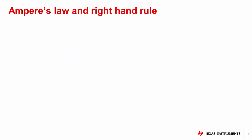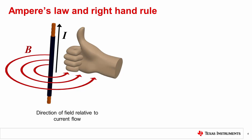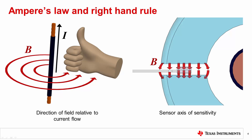Let's take a moment to give a quick review of Ampere's Law and the right-hand rule. Ampere's Law states that the magnetic field in space around a conductor is proportional to the electric current through that conductor. The magnetic field lines around a conductor form concentric circles perpendicular around the conductor. If you make a thumbs-up with your right hand and point your thumb in the direction of current flow, your fingers are curled in the same direction as the direction of the magnetic field. The direction of magnetic field is important for magnetic current sensors, as these devices have a particular axis of sensitivity. If the direction of magnetic flux is not traveling in their axis of sensitivity, they will not detect the field or produce a measurable output.